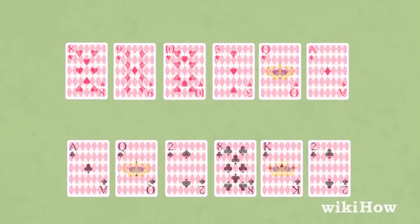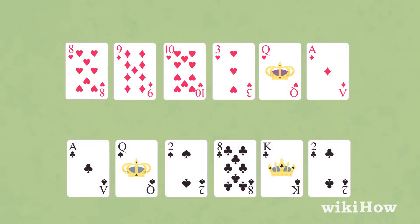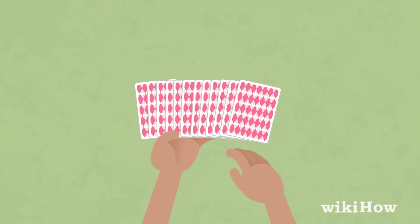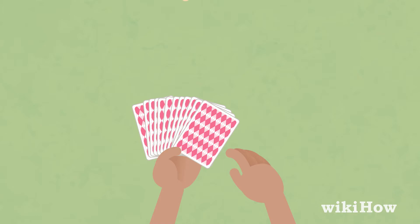To do a version of the trick that doesn't involve peeking, split the deck into black and red cards ahead of time and put the red cards on top. Then, fan the deck out face down and ask the person to pick a card and look at it.